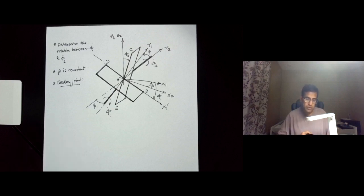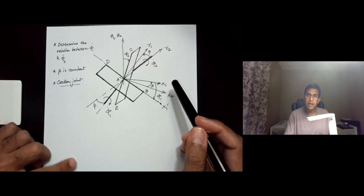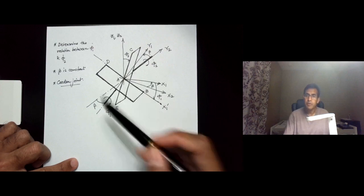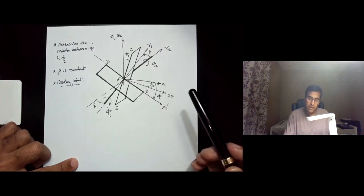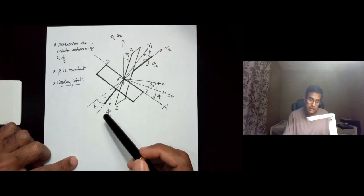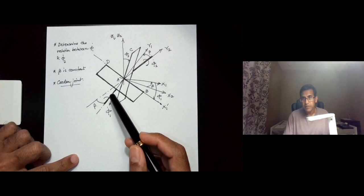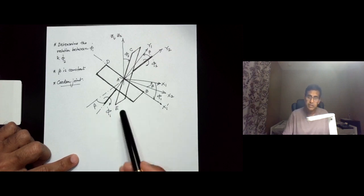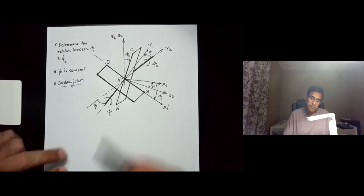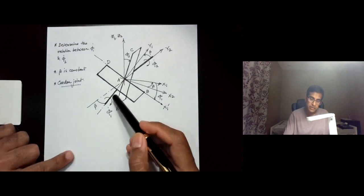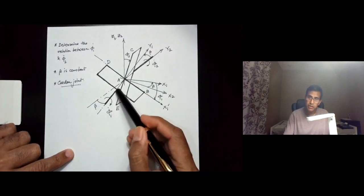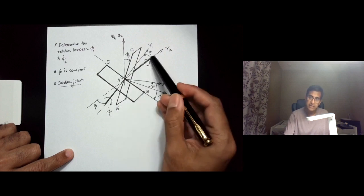What you see here is a universal joint, also called a Cardan joint. A universal joint is a joint that helps transmit rotational motion from one axis to another when the two axes are not in the same direction. In this case, there is a driving axis and a driven axis.